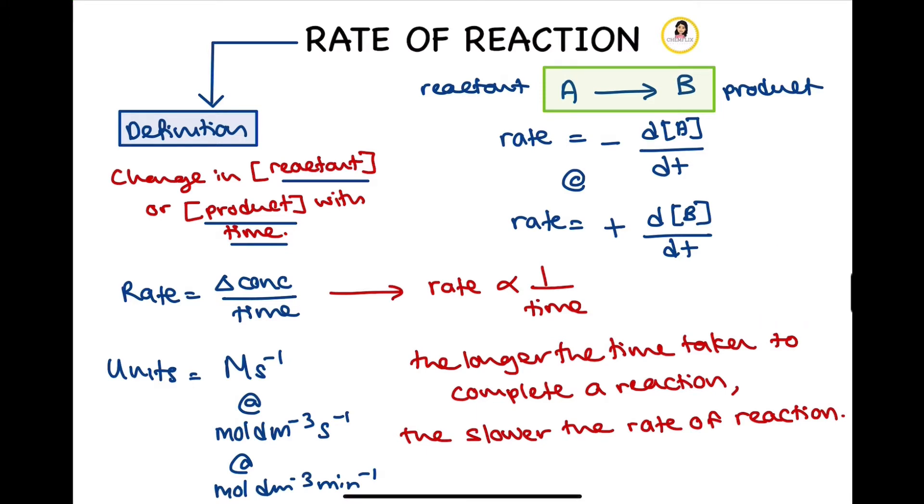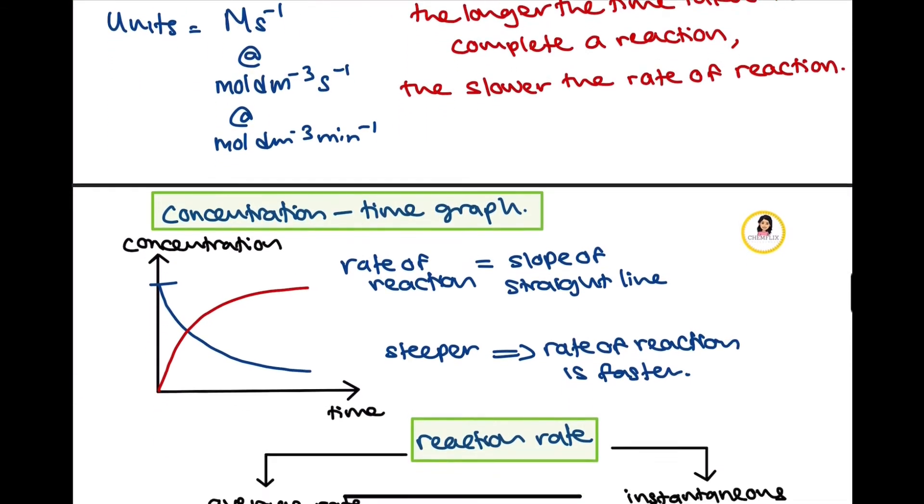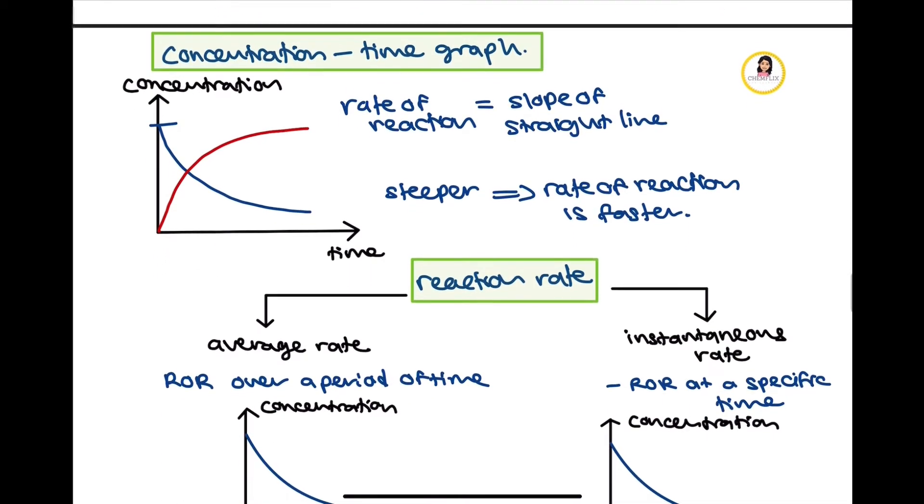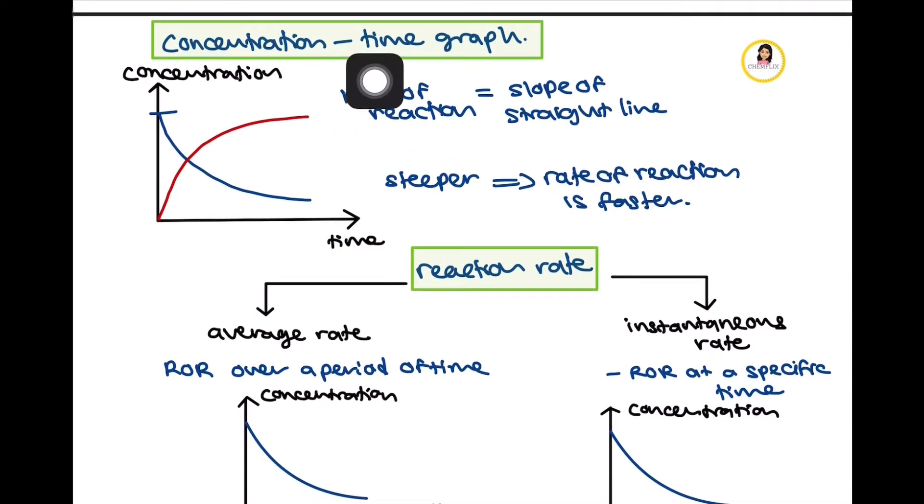Now let's move on to graphs on rate of reaction. The common graph you would see is the concentration against time graph. As you can see here, the red line moving up is for the product, where concentration increases over time, and the blue line going down is for the reactant. Rate of reaction is determined through the slope of a straight line.